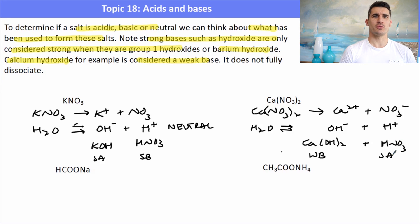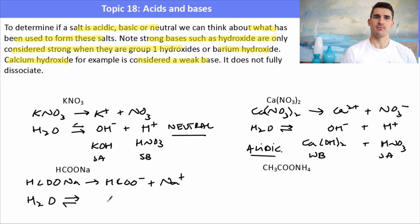For the third one, we have sodium methanoate. It would dissolve in water to form the methanoate ion and a sodium ion. Again, if we put in the self-ionization of water, we could form methanoic acid and sodium hydroxide. Sodium hydroxide is a strong base, methanoic acid is a weak acid. So we have a weak acid and a strong base, which would make this solution basic.